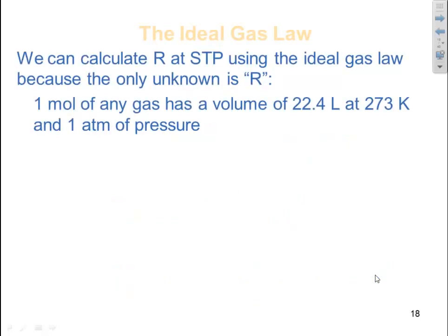We can calculate R at STP using the ideal gas law because the only unknown is R. We know that at STP.